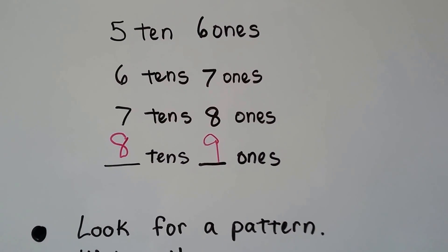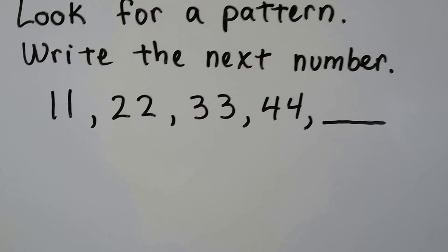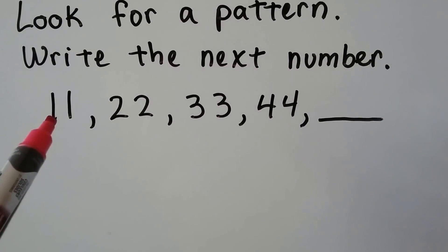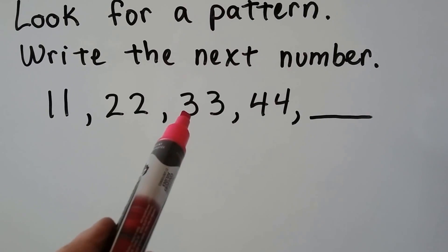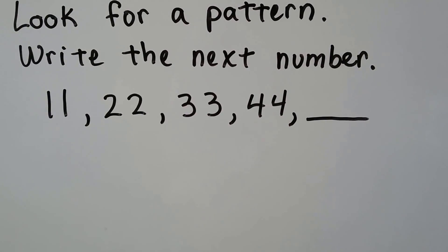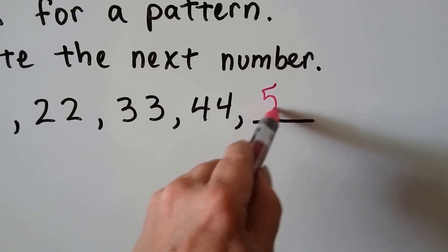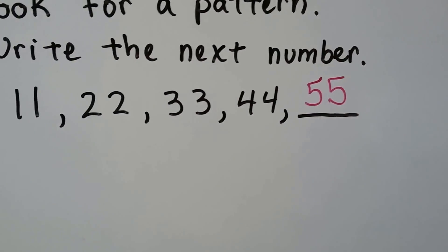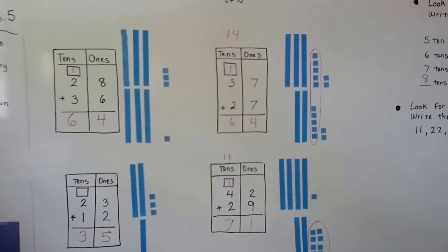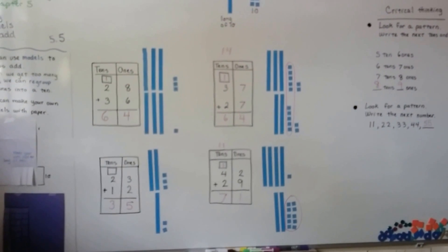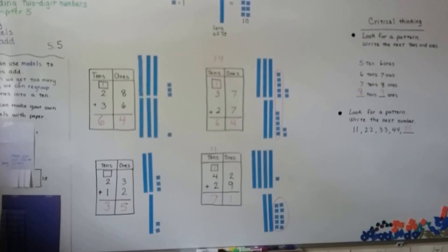Let's try this one — look for the pattern and write the next number. We have one ten and one one, then two tens and two ones, then three tens and three ones, then four tens and four ones. What would come next? If you said five tens and five ones, you're right — good job! Try to make your own models if you can, and use them to help you add two-digit numbers. I'll see you next video — bye bye!